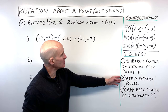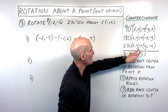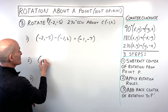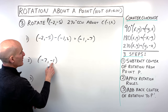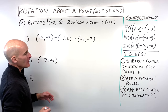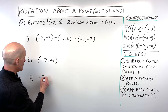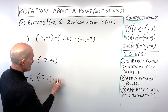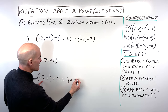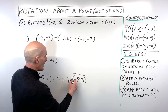Step 2: apply the rotation rules for 270 degrees. We switch x and y and make the new y value the opposite. So (-1, -7) switches to (-7, -1), then we make the new y value the opposite: (-7, 1). Step 3: add back the center of rotation. (-7, 1) plus (-1, 2) gives us -7 + -1 = -8, and 1 + 2 = 3. Our final point is (-8, 3).